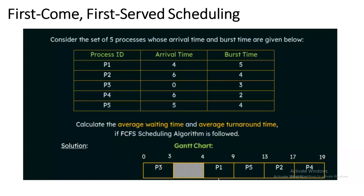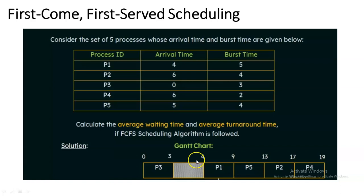P3 is completed at unit time 3. At unit time 3, some other process should enter the CPU. Checking the table, no process has arrived at unit time 3. So check unit time 4 — P1 has an arrival time of 4. The time between unit 3 and unit 4 is called the idle phase of the CPU, where the CPU is not processing any process. At arrival time 4, P1 enters the CPU.